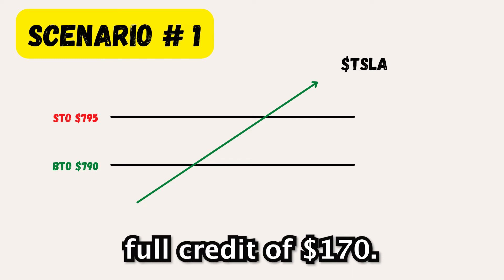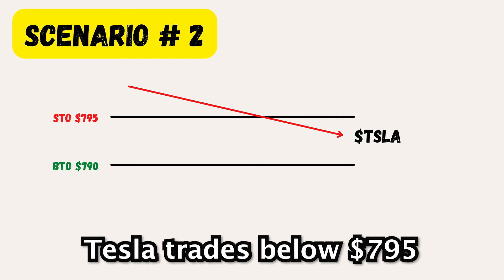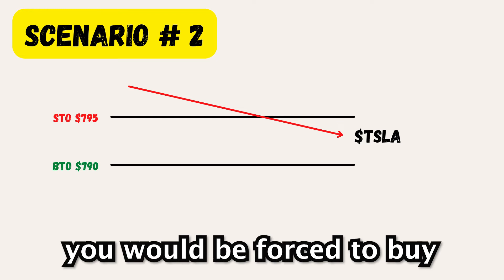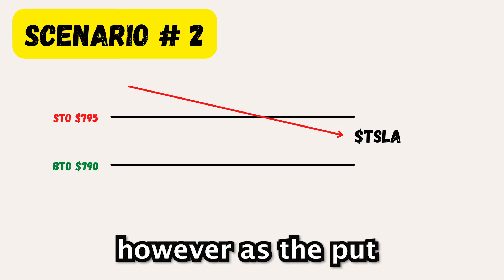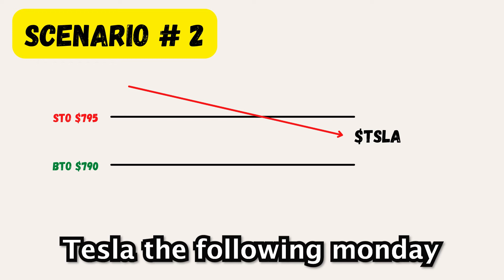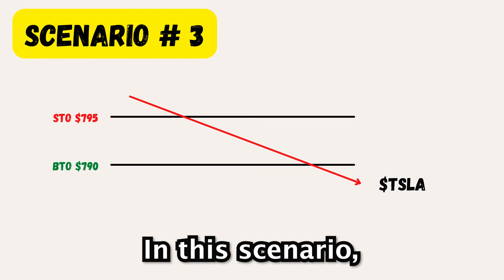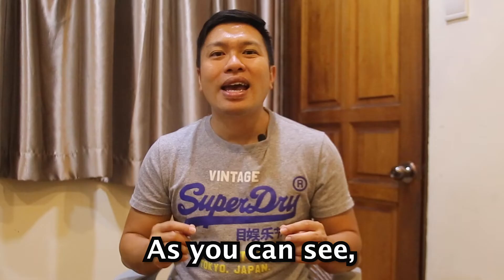Scenario number two: Tesla trades below $795 but above $790. This is not an ideal situation. In this case, you'll be forced to buy Tesla at $795. However, as the put you bought is out of the money, you'll be assigned Tesla the following Monday and can sell it at the market price then. Scenario number three: Tesla tanks and trades below $790. In this scenario, you will experience the maximum loss of $330. As you can see, both scenarios two and three are totally not ideal.